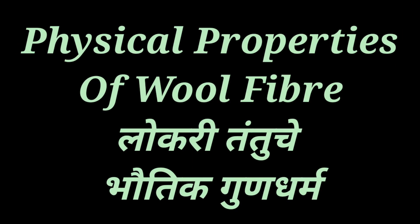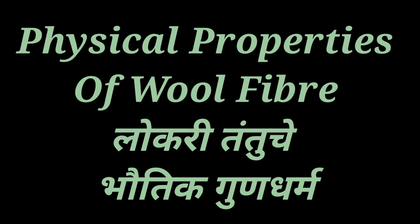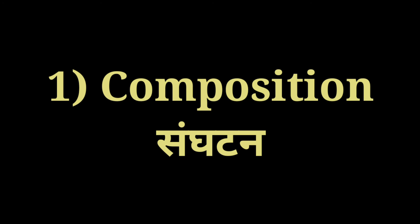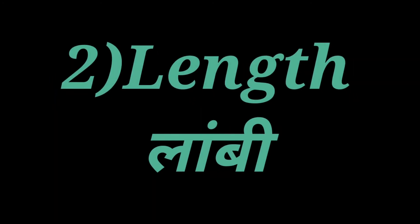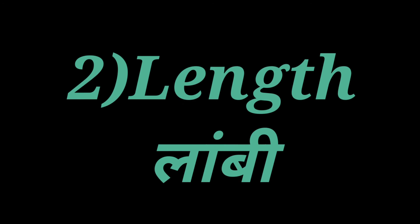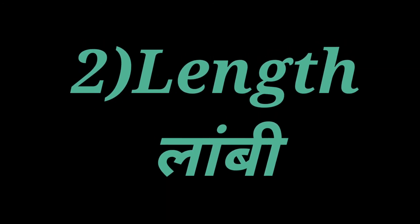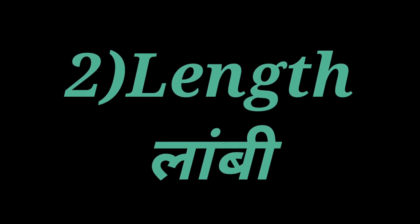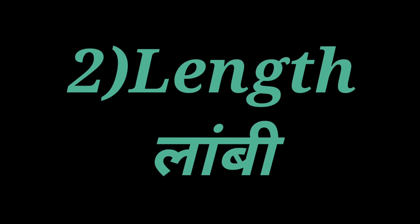Lokeri tantu cha bhautik gundarma - physical properties of wool fiber. Number 1: sangatan - composition. Lokeri tantu prathin yugt. Kyevall lokeri tantu kandak adhati: carbon 50%, oxygen 24%, nitrogen 7%, sulfur 4%. Ashe sarvotatwa mulli karotin nava che prathin e nirman hoati. Ek prakare lokeri tantu raasainik tattwa nini tajar jale la ashtu strength. Lokeri tantu chi lambe sarv sadharan pini 2-10 cm ashtu - ya pikshya jashtu dhekhi la ashtu shakti talam. Tantu chi lambe kami kami varrat, tantu chi lambe jashtu ashtu.